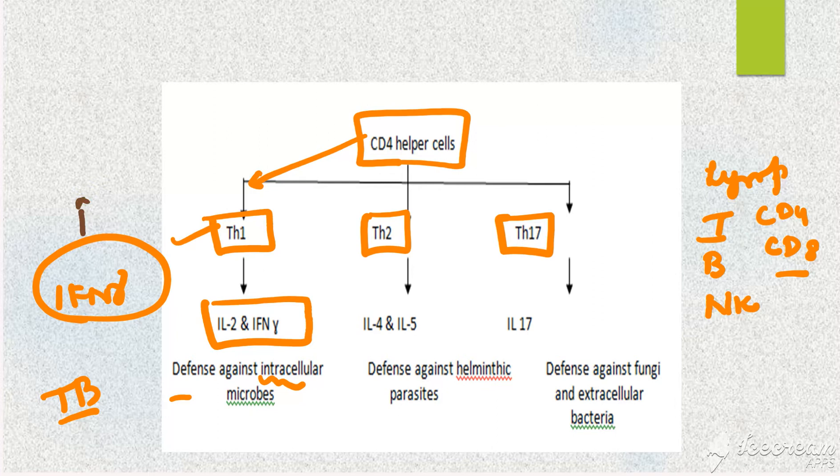One important cytokine that converts your macrophage to an epithelioid histiocyte is interferon gamma. You need to form a granuloma to contain the infection. To form a granuloma you need interferon gamma, which can only be formed when you have a T helper 1 cell.